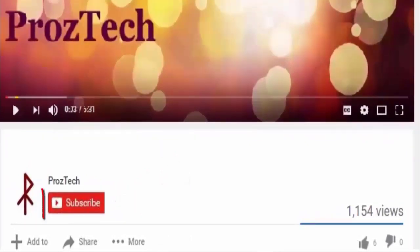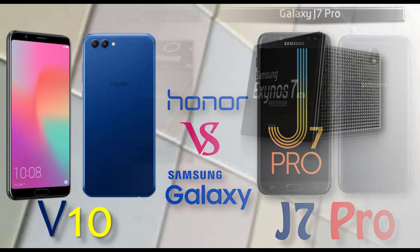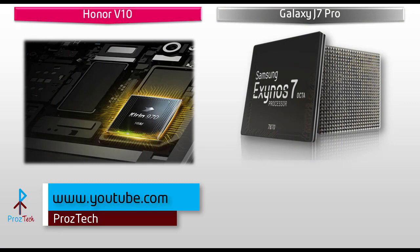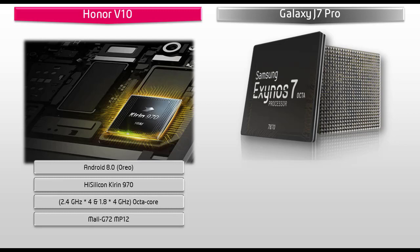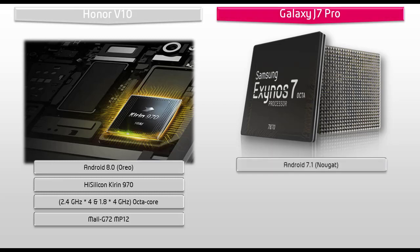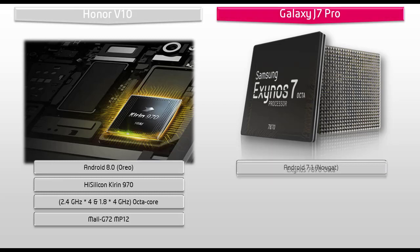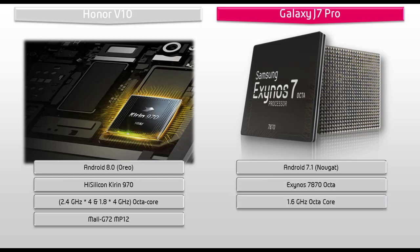Friends, you are watching Prostec, so let's get started. Starting with the Huawei Honor V10 device, it works on Android 8.0 Oreo and is powered by HiSilicon Kirin 970 with Neural Network Processing Unit with 2.4 and 1.8 GHz Octa-Core and with GPU Mali G72 MP12. Whereas Samsung Galaxy J7 Pro runs Android 7.1 Nougat and is powered by Exynos 7870 Octa Processor 1.6 GHz with GPU Mali T830 MP2.